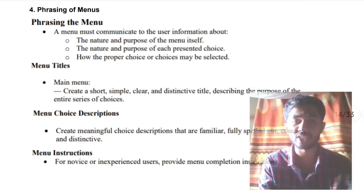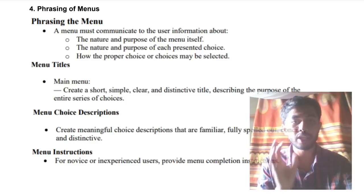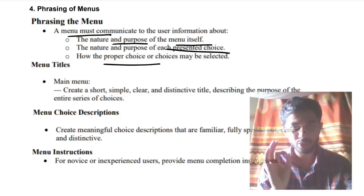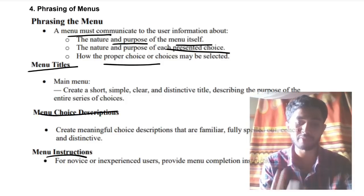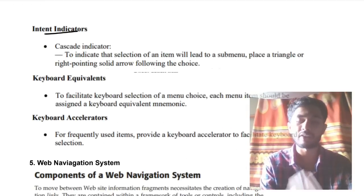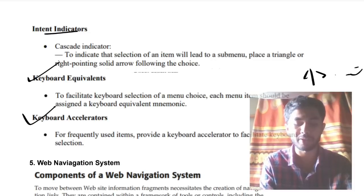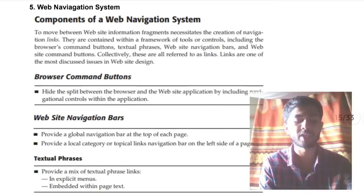The next super important question is the phrasing of menus. Phrasing means how the menu can be made more communicative and beautiful. The menu must communicate the nature and purpose of the presented choices and how the proper choice may be selected — guiding the user through every step. Components include menu titles, choice descriptions, menu instructions, and additionally an intent indicator — hints to help the user choose. There are also keyboard equivalents like Ctrl+C and keyboard accelerators, where an underlined letter lets you select that option via keyboard.